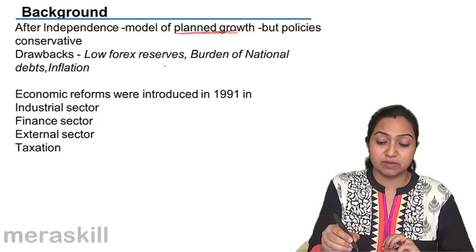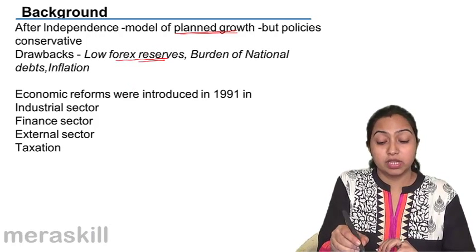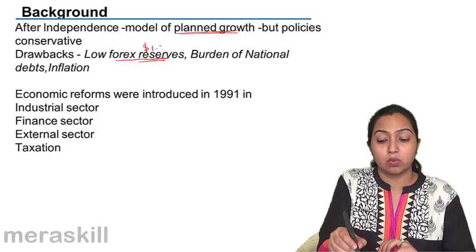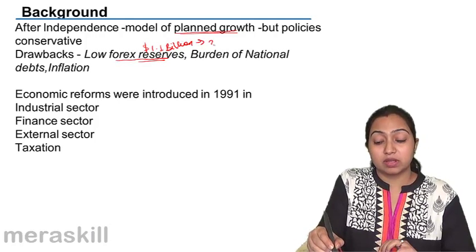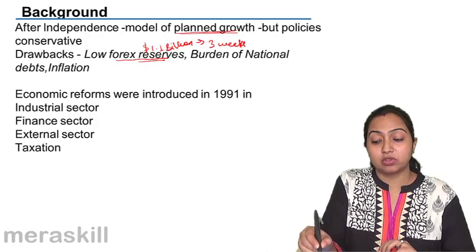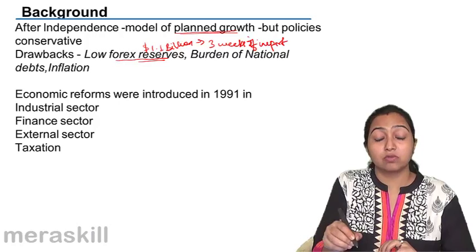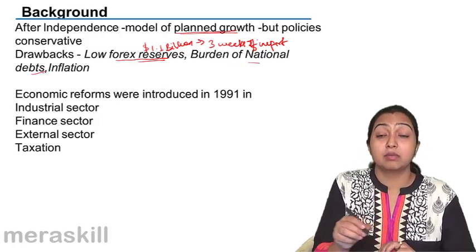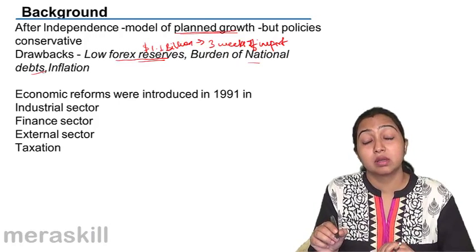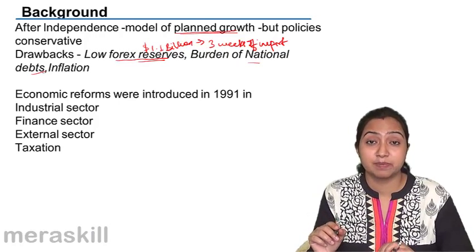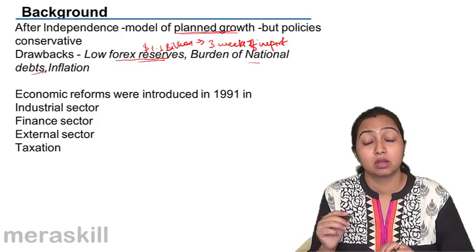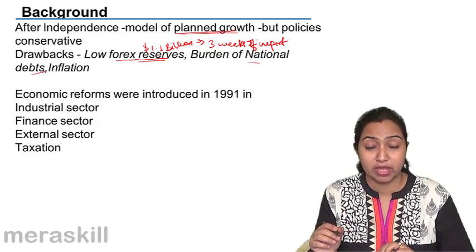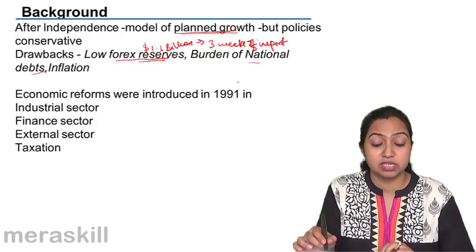The foreign exchange that was available was very low — just $1.1 billion in foreign exchange reserves, which was just sufficient to pay for three weeks of imports. So the forex reserve was very low. The burden of national debt was also very high because the government, in order to carry out its expenditures, was continuously borrowing. So the burden of national debt had also increased a lot.